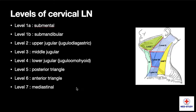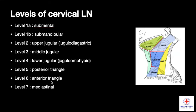Now coming to the levels of cervical lymph nodes, we can see in this diagram, and here is the elaborated version. Level 1a is the submental lymph node, level 1b is the submandibular lymph node, level 2 is the upper jugular or jugulodigastric lymph nodes, level 3 is the middle jugular, level 4 is the lower jugular or jugulo-omohyoid lymph nodes, level 5 is the posterior triangle lymph nodes, level 6 is the anterior triangle lymph nodes, and level 7 is the mediastinal nodes.